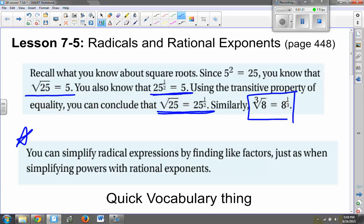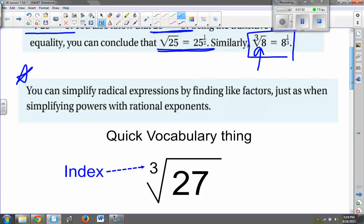So we are going to simplify radical expressions by finding like factors, just like when we simplify powers with rational expressions. We're going to be doing problems like the cube root of 8, or the square root of 25, or the fourth root, or the fifth root, or something else like that.